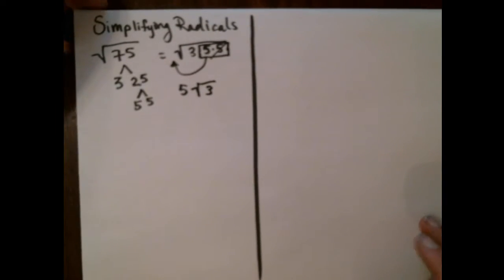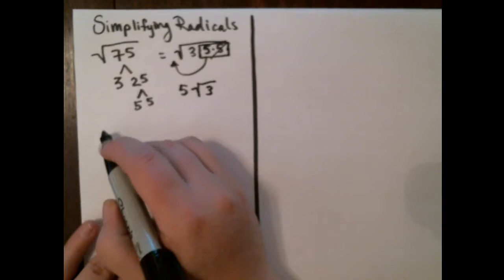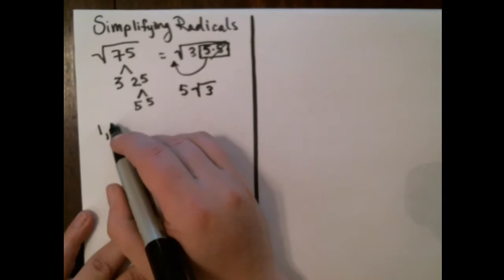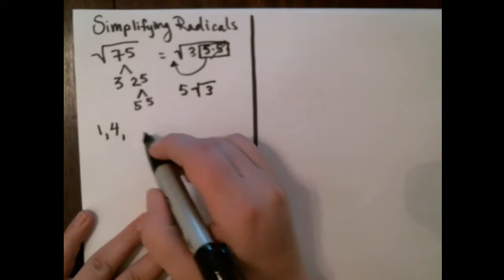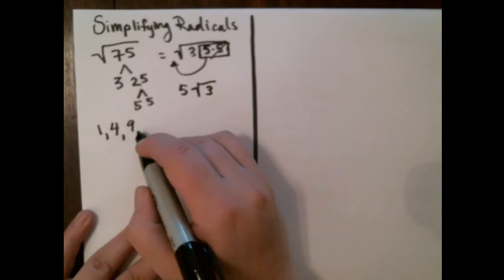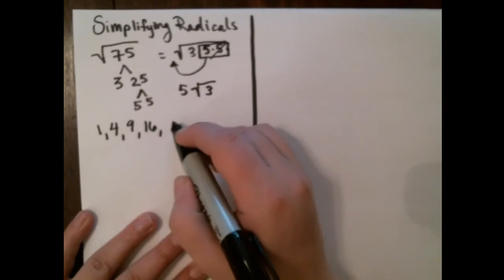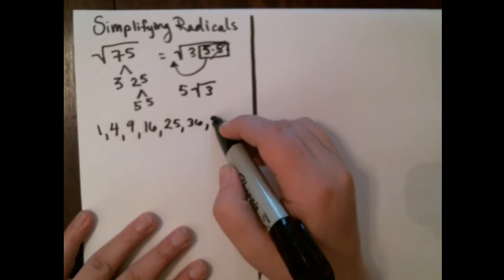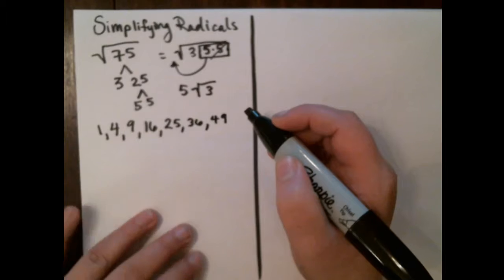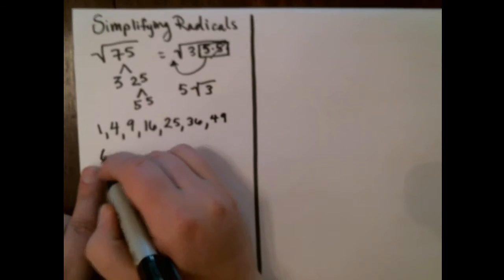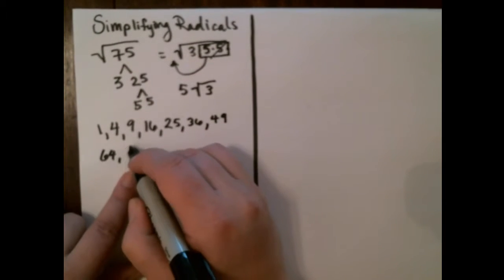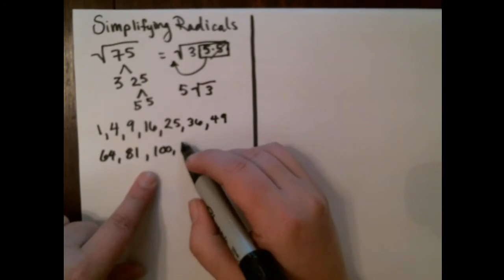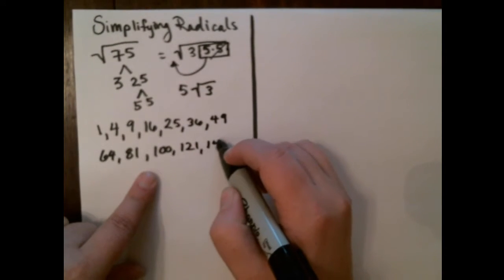Actually, I'm going to pause for a second and just remind you of what squares are. So 1 times 1 would be 1, 2 times 2 would be 4, 3 times 3 would be 9, 4 times 4 is 16, 25, 36, 49, 7 times 7, 8 times 8 is 64, 9 times 9 is 81, 10 times 10 is 100, 121, and 144.